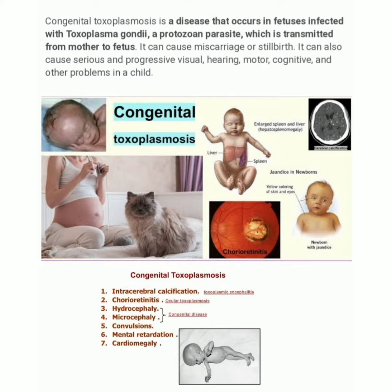The neonate may present with hydrocephalus, hepatosplenomegaly (enlarged spleen and liver), jaundice, and chorioretinitis. Remember, chorioretinitis is an important feature of congenital toxoplasmosis, and neonates with congenital toxoplasmosis need ophthalmological screening.